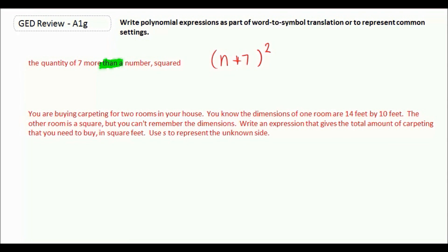So we have a room that we don't know the dimensions for and that's S times S. And then we have another room we do know the dimensions for, which is 14 and 10. The area is going to tell us how much carpeting we need. So the area of this room would be S times S, which is S squared. The area of this room would be 14 times 10, which is 140.